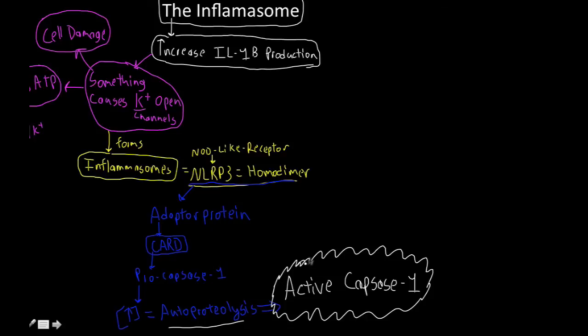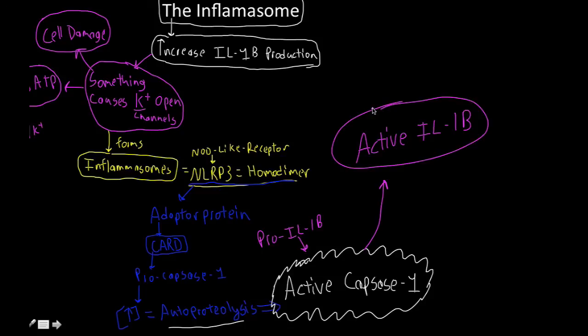Why is this super important? What goes into active caspase-1 would be pro, the pre-inactive form of interleukin-1 beta going in. What do we get coming out? We get active interleukin-1 beta.